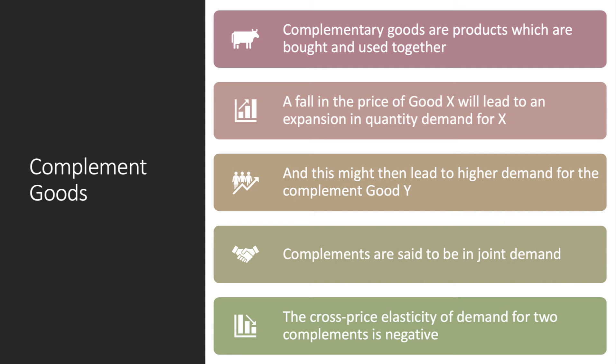Complements are products that are bought together — typically you buy them and use them together. A fall in the price of good X will lead to more people buying good X, and they might then also increase their spending on good Y, which is a complement to good X. Hence we say that complements are said to be in joint demand, or complementary demand.